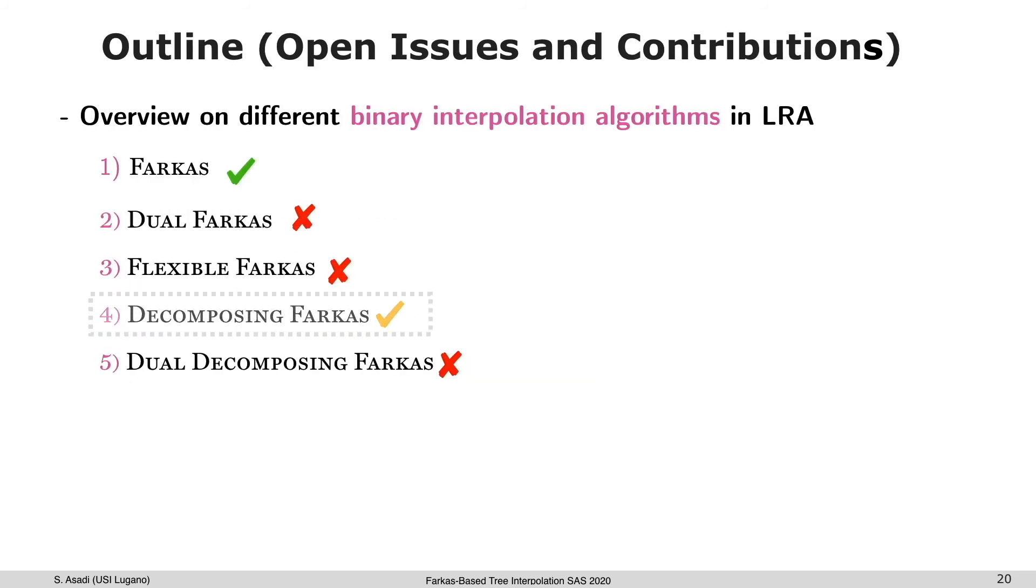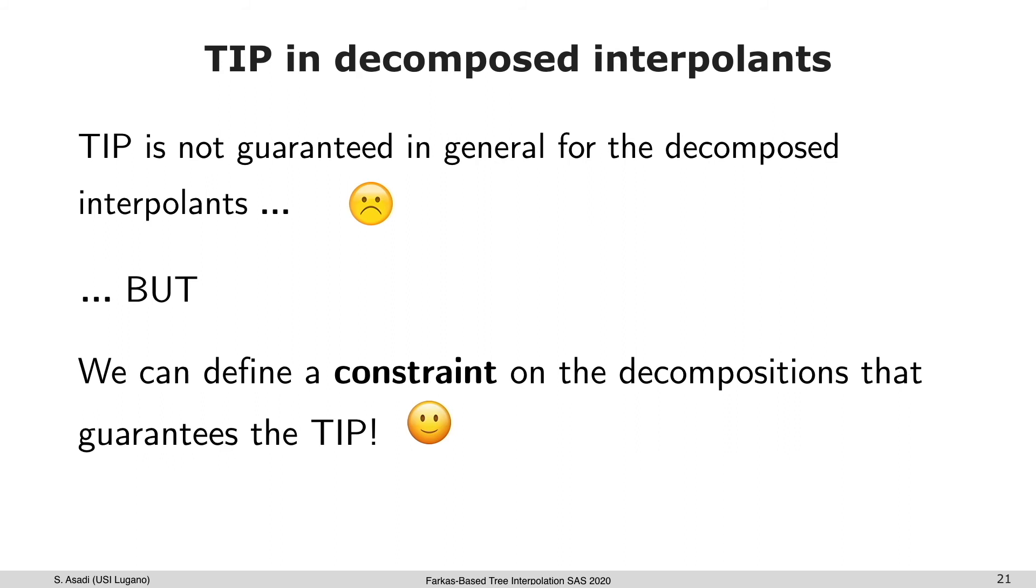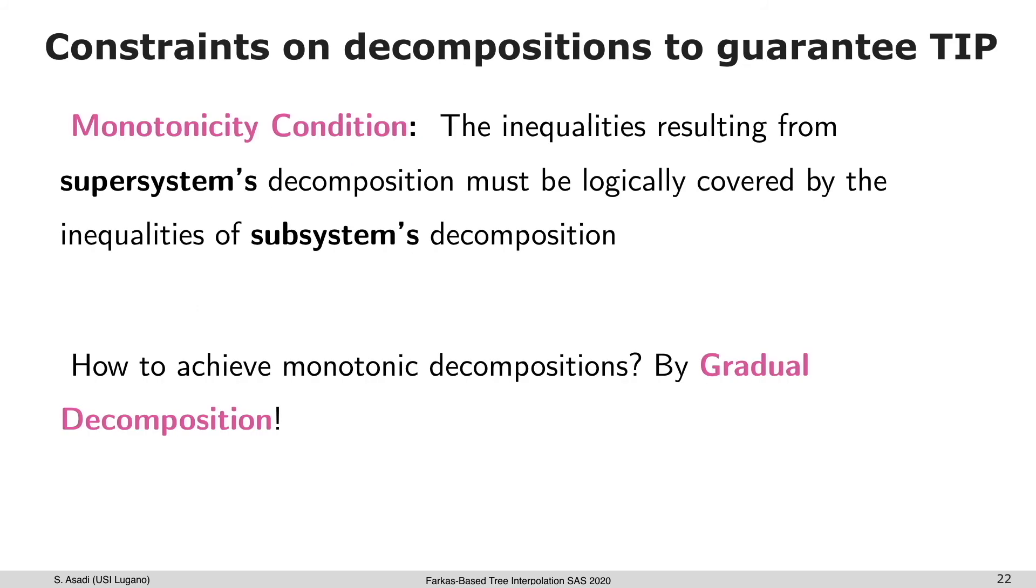Now let's move to decomposing Farkas interpolation algorithm. In general, TIP is not guaranteed in the decomposed interpolant, but we can define some constraint on the decomposition such that it could guarantee the TIP. We define it as a monotonicity condition. The idea is the inequalities resulting from the supersystem's decomposition must be logically covered by the inequalities of the subsystem's decomposition. How can we achieve this monotonic decomposition? The idea is gradual decomposition.